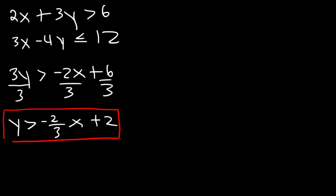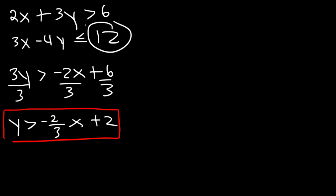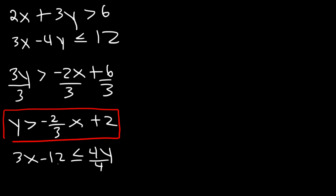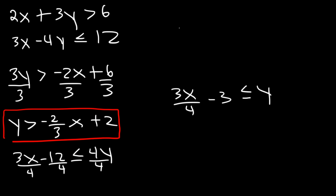For the second equation, moving negative 4y to the right gives positive 4y, and moving 12 to the left gives negative 12. So 3x minus 12 is less than or equal to 4y. Dividing everything by 4 gives 3 over 4 times x minus 3 is less than or equal to y. Reversing the equation, y is greater than or equal to 3 over 4 times x minus 3. I'll use this slope-intercept form to graph it.